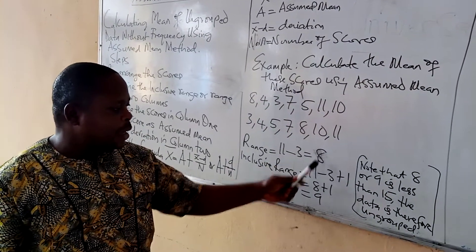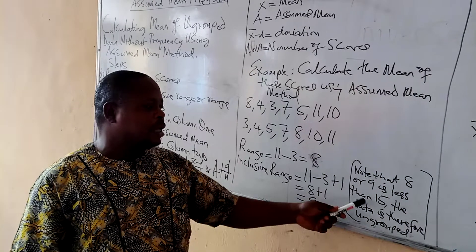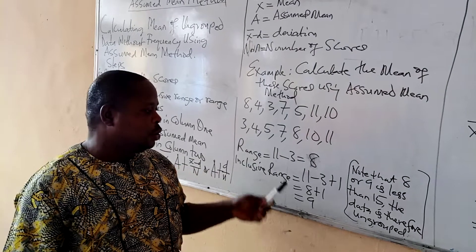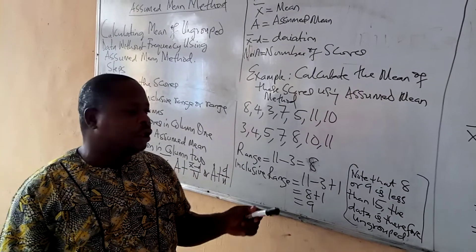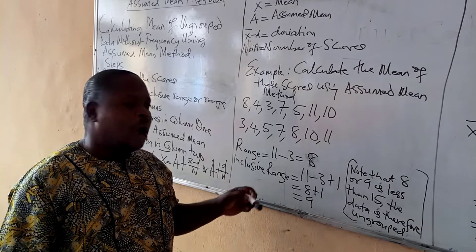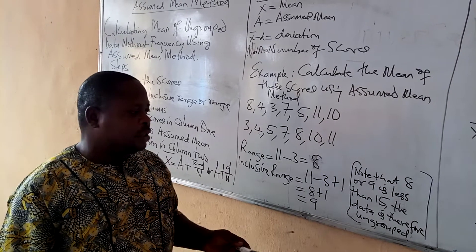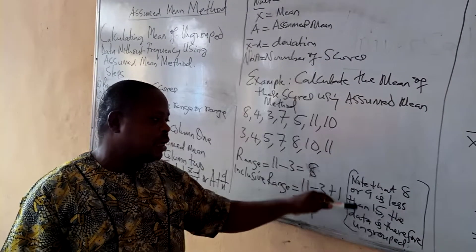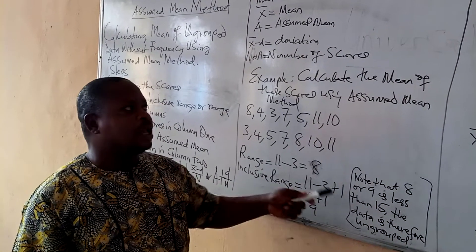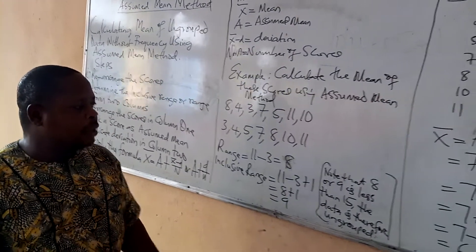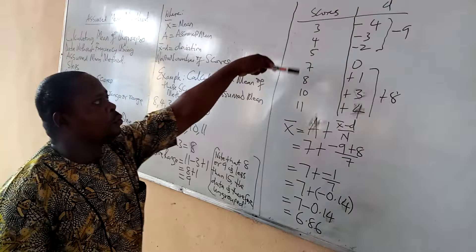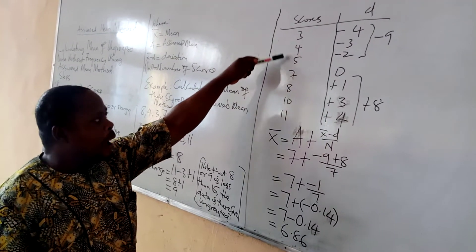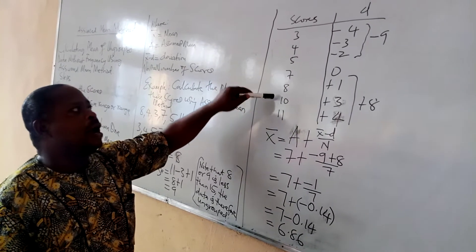These scores — either eight or nine — are less than fifteen. Remember that for data to be grouped, the range or inclusive range should be fifteen and above. Since the range and inclusive range here are less than fifteen, this data is to remain ungrouped. The next step is to form two columns. In column one, arrange the scores, which are already arranged here: three, four, five, seven, eight, ten, and eleven.